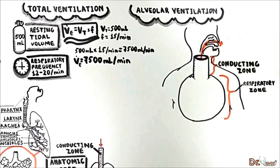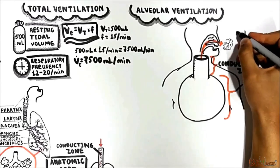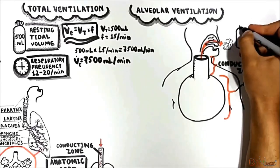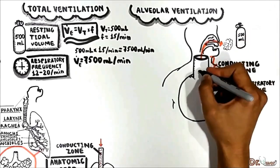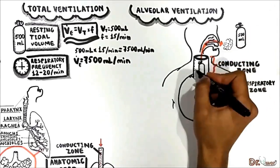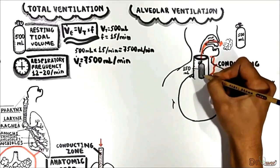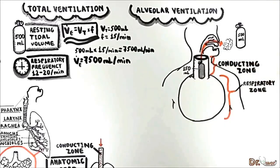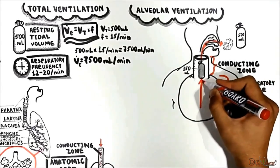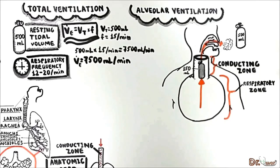When you breathe out and expire the tidal volume of 500 mils, 150 mils of air still remain in the anatomical dead space of the conducting zone. This volume comes from the alveoli when you breathe out and is not a part of the tidal volume, because you have already expired 500 mils.